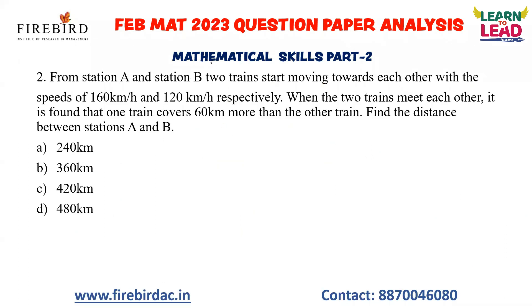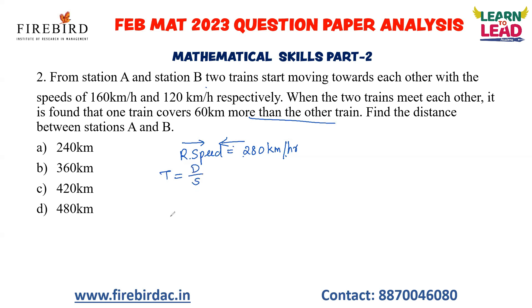We will go to the next question. Some questions require solving from the given options. From station A and B, two trains start moving towards each other. When two trains are moving in opposite directions, their relative speed is the sum of their speeds — that is 280 km per hour. The basic formula for time, speed and distance is: time = distance / speed.